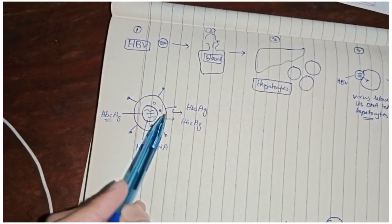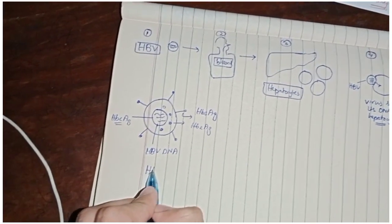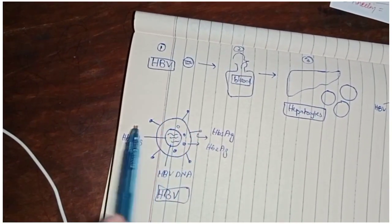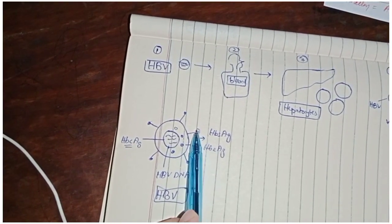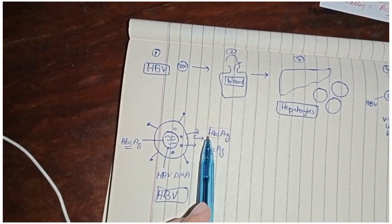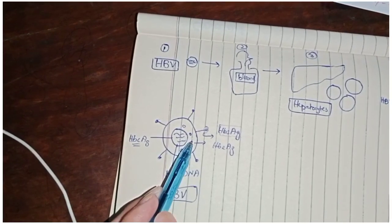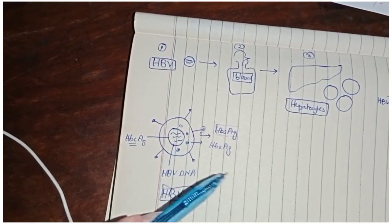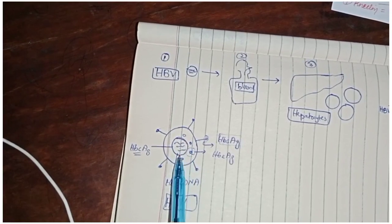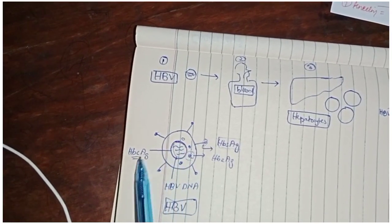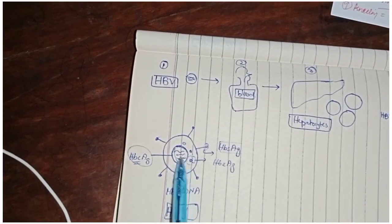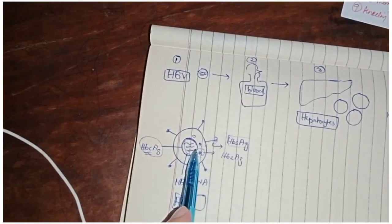To understand this, we first have to look at the hepatitis B virus. This is the structure of the hepatitis B virus. You can see the hepatitis B surface antigen — these are the antigens present on the surface of hepatitis B. This antigen helps the hepatitis B virus attach with the hepatocytes, the kind of cells in the liver. This is basically the core capsid and it is called hepatitis B core antigen. Inside the core you can see there is the DNA. Hepatitis B virus is a DNA virus.